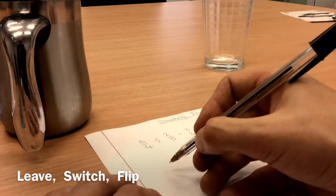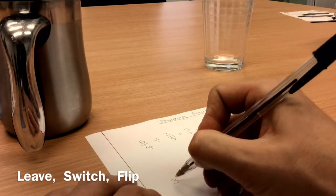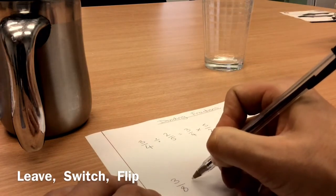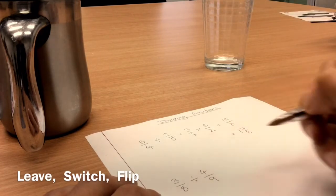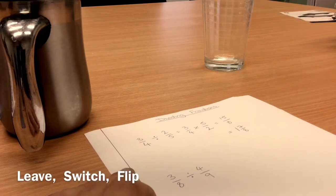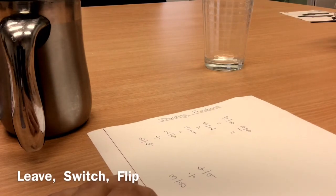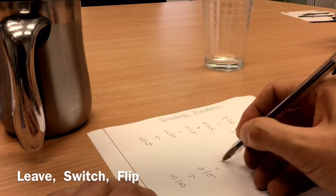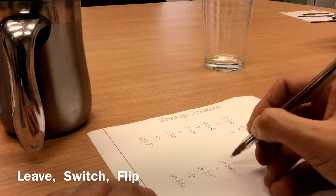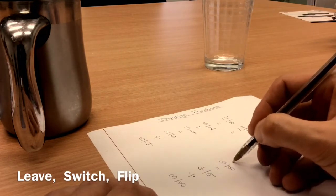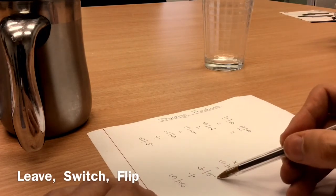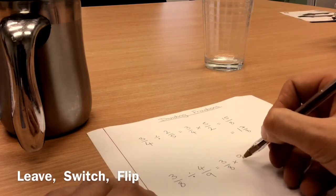Let's try another example. Let's try three-eighths divided by four-ninths. Three-eighths divided by four-ninths. So again, the key words leave, switch, flip. I leave the three-eighths alone. I switch the divide for a multiply, and I flip the last fraction upside down.